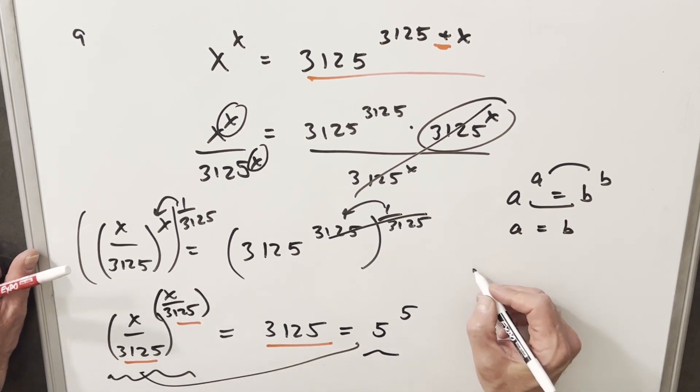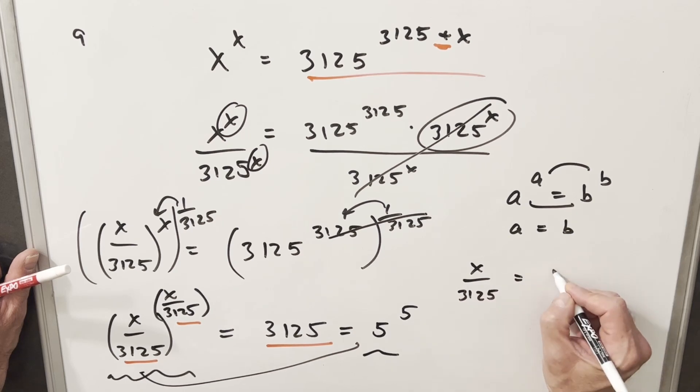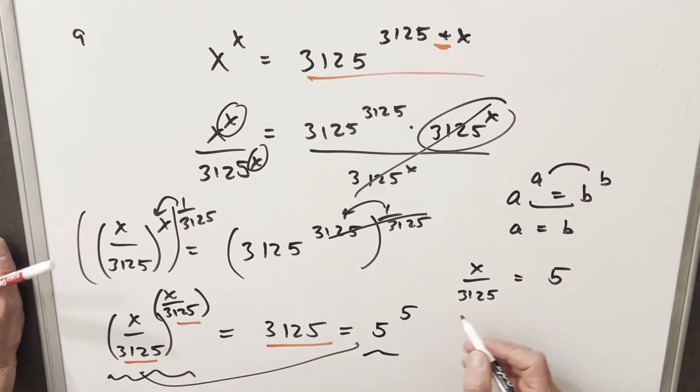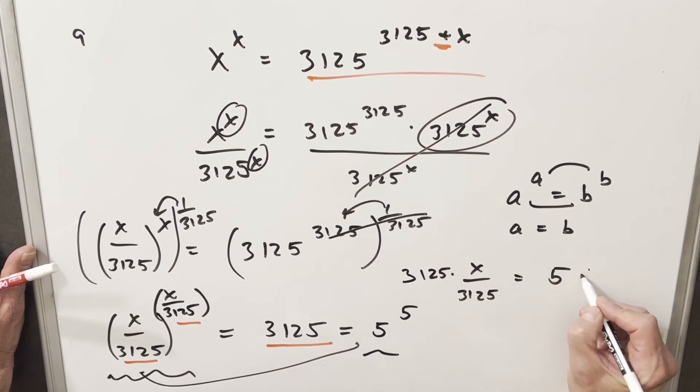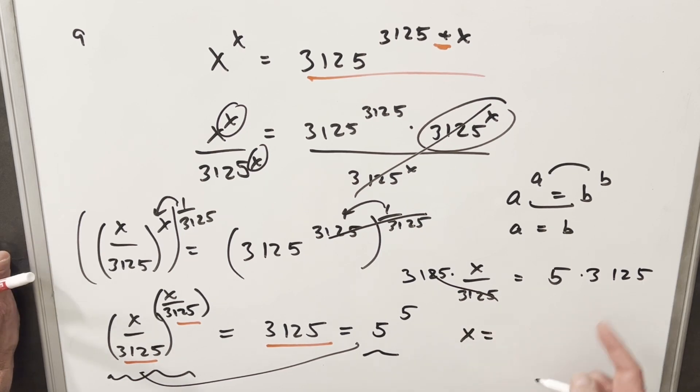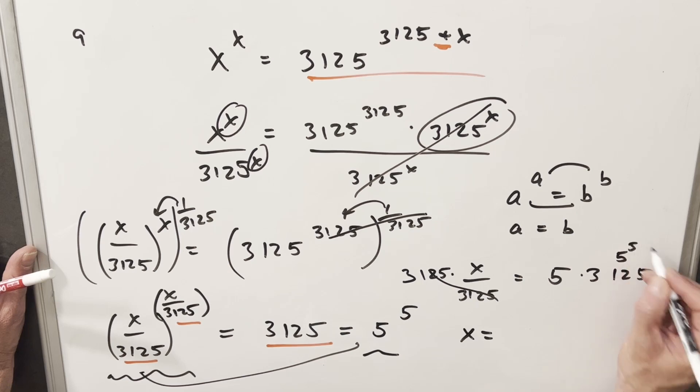Just equating our base to base, we'll say x over 3125 equals just 5. Then we can multiply 3125 on both sides here. Over here it's going to cancel. And we just have our solution for x, which is going to be, where this is 5 to the 5, we could write this as 5 to the 6.